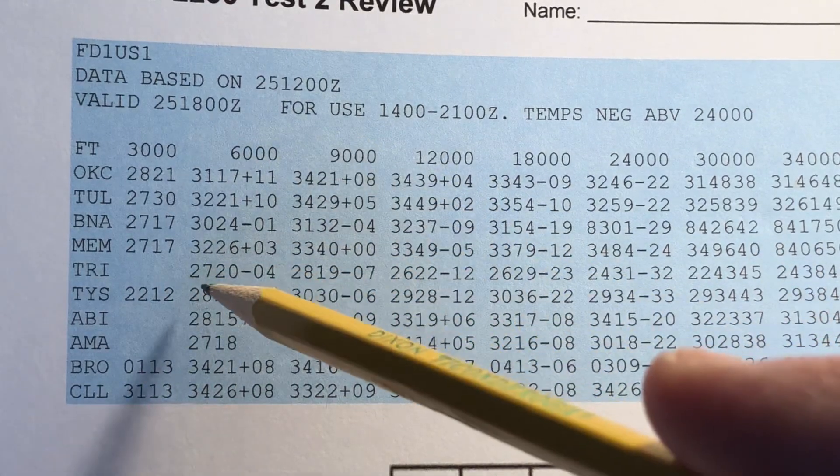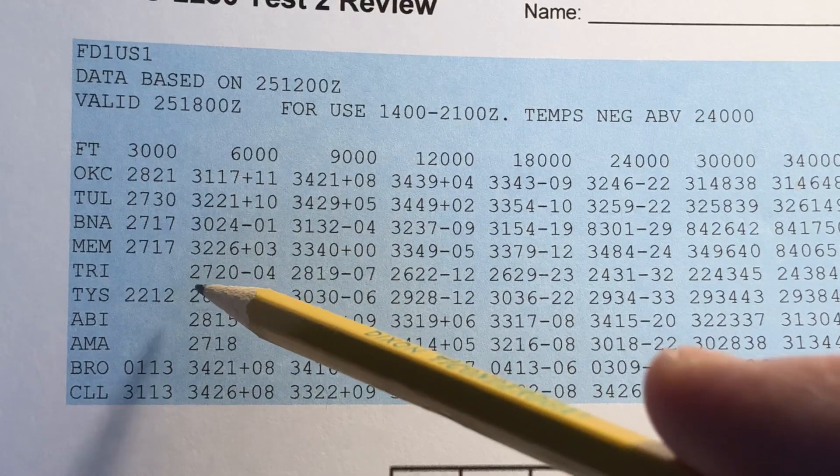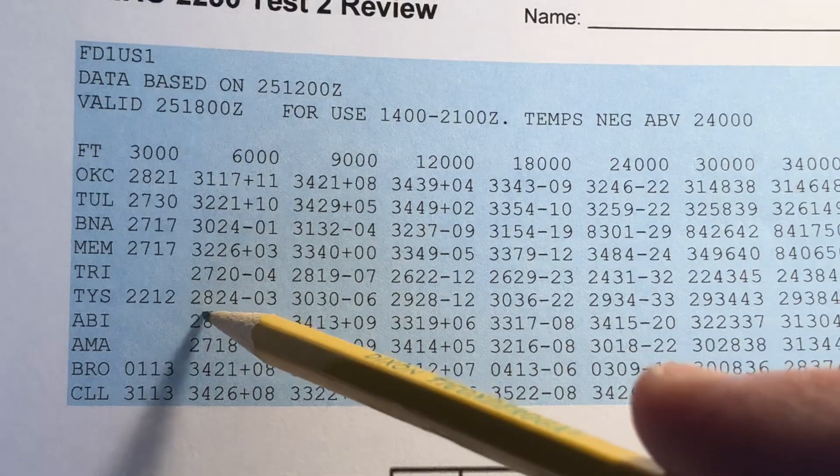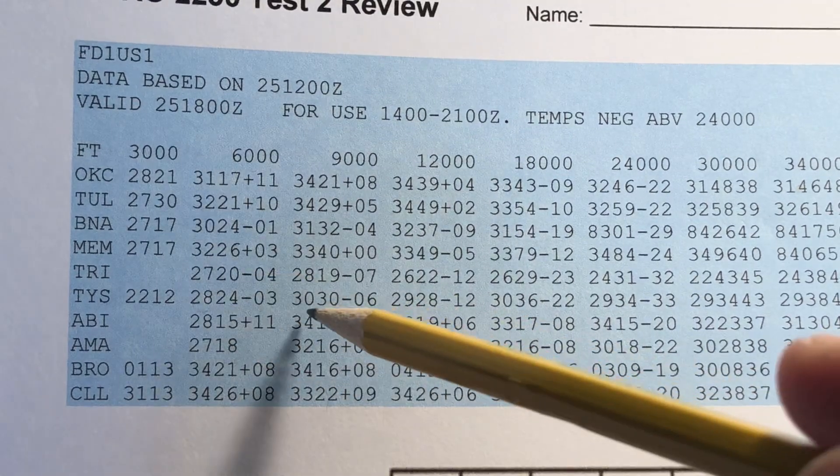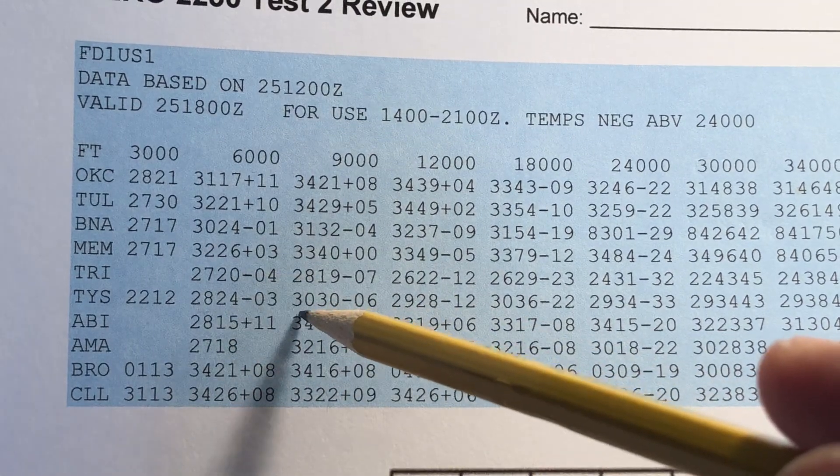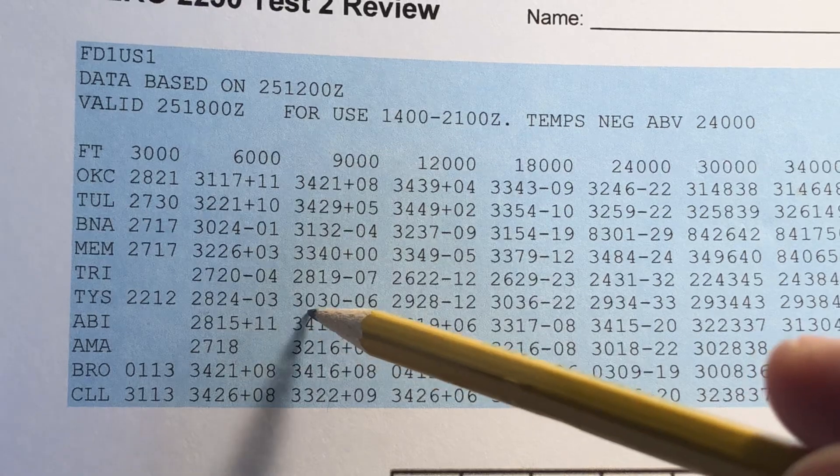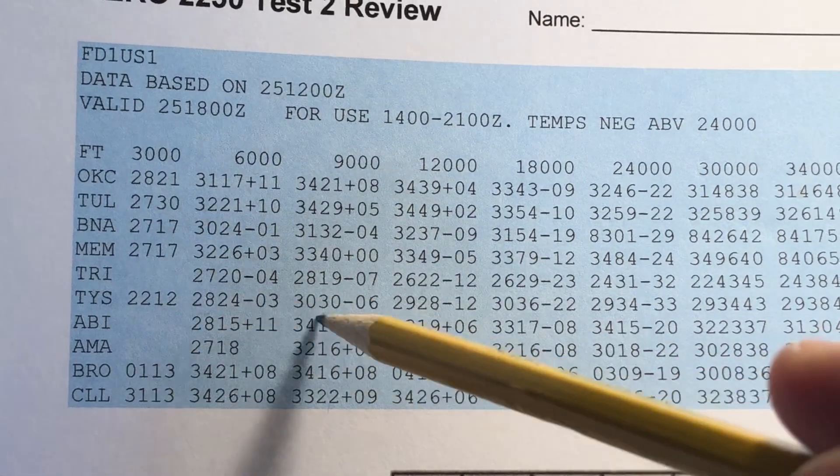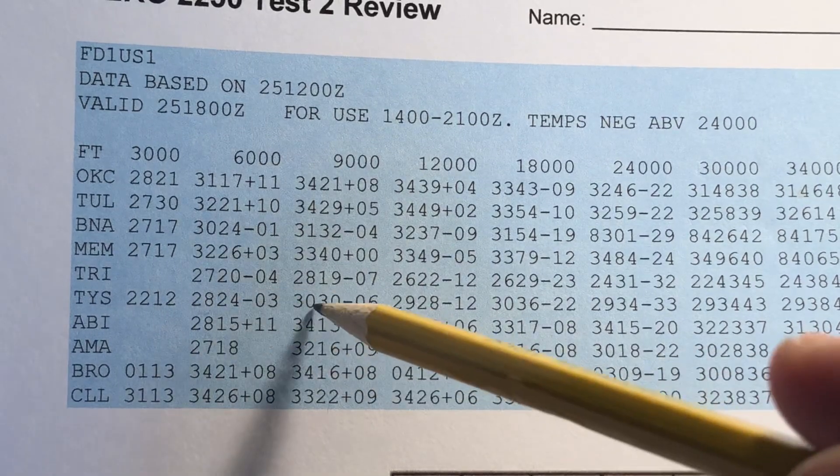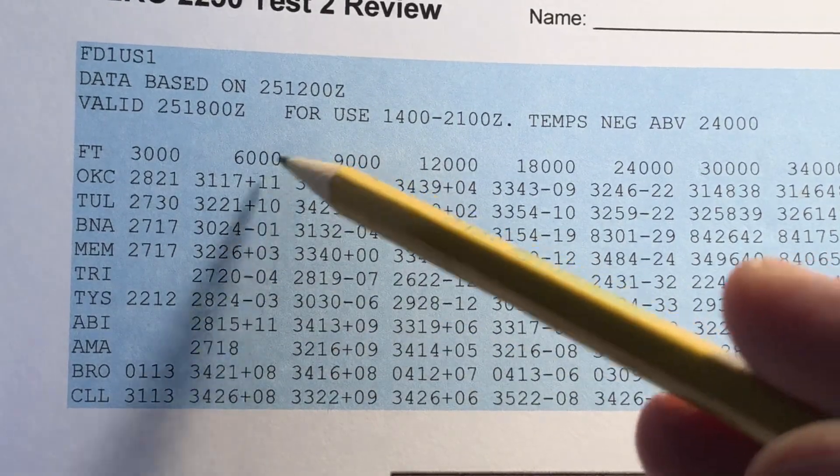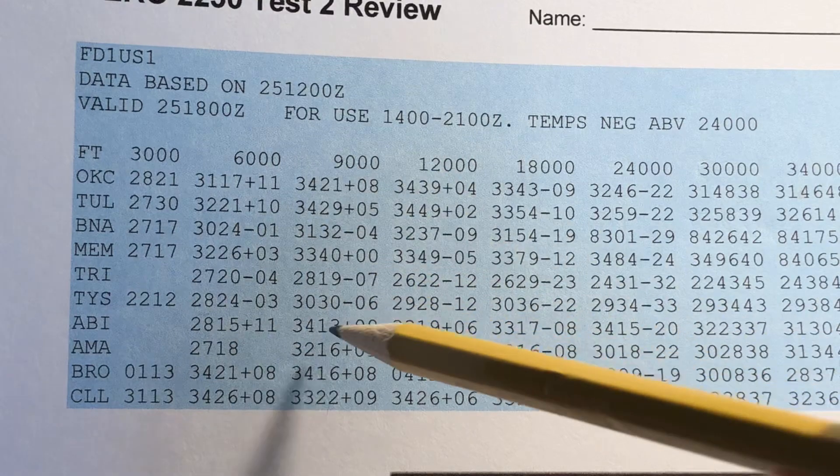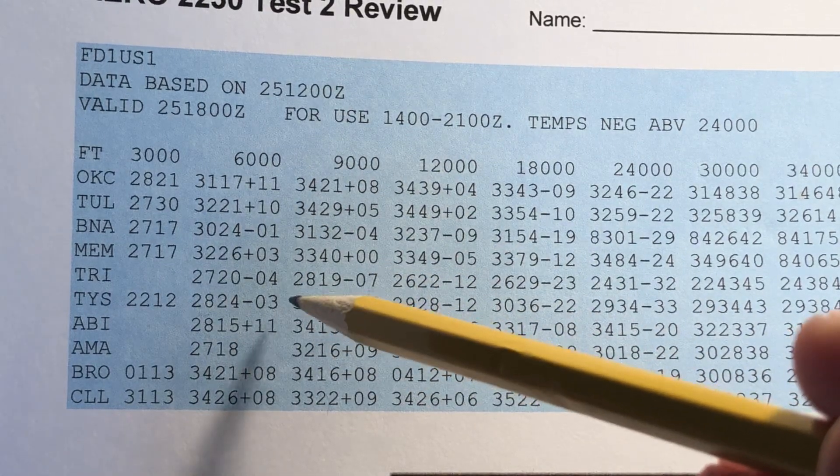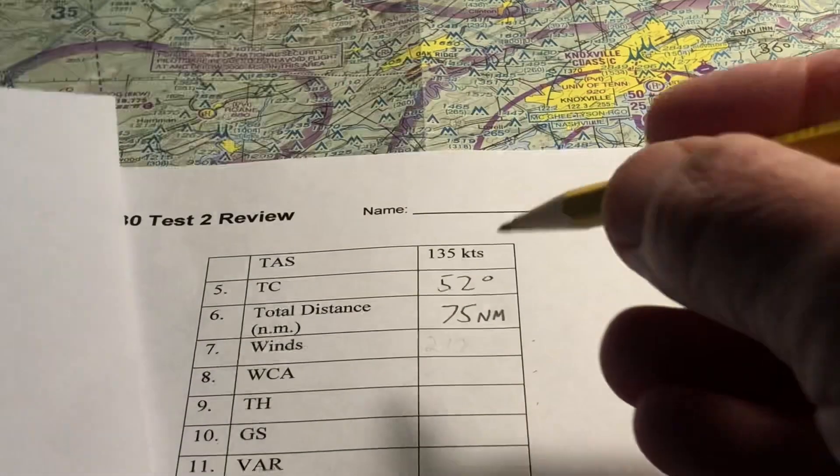So let's look at the winds at 6,000. Let's specifically look at the wind direction. At 6,000 at TYS, the wind direction is 280. At 9,000 at TYS, the wind direction is forecast to be 300. That's a 20 degree difference. So halfway between those two, 7,500 is halfway between 6,000 and 9,000. Halfway between those two is 290. So that'll be our wind direction. So I'm going to write that down.